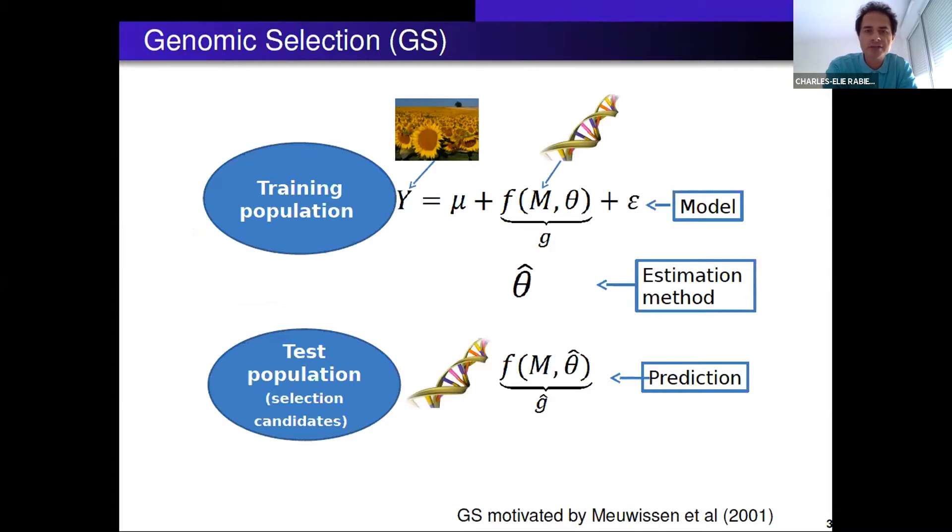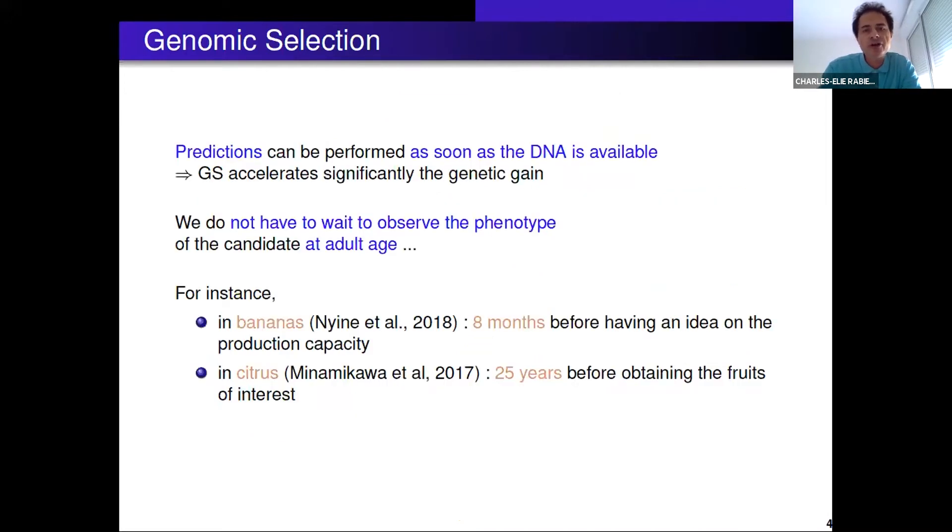The starting point was genomic selection, a famous technique in genomics for selecting individuals on the basis of genomic predictions. You have a training population for which you observe a phenotype, like the flowering date of sunflower, and you observe the DNA, then you fit a model. You use the model to perform predictions on a test population containing selection candidates available under the DNA. The good thing about genomic selection is you can perform predictions as soon as DNA is available. It accelerates genetic gain without waiting to observe the phenotype at adult age. For instance, in bananas eight months are required to have an idea of production capacity, in citrus 25 years before obtaining the fruits.